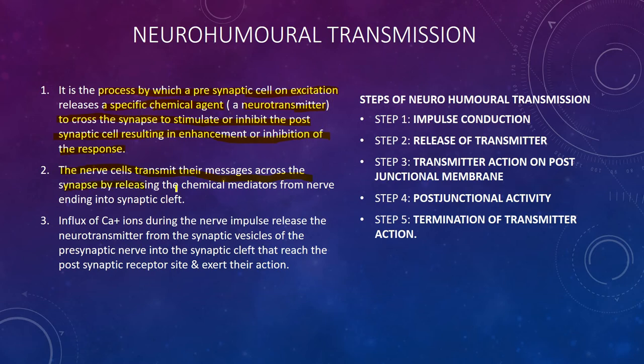Nerve cells transmit their messages across the synapse by releasing chemical mediators from nerve endings into the synaptic cleft. There is an influx of Ca²⁺ ions during the nerve impulse, causing release of transmitter from the synaptic vesicles of the presynaptic nerve into the synaptic cleft to reach the postsynaptic receptor site. The synaptic cleft is the space between a presynaptic and a postsynaptic axon, and the synaptic vesicle is a sac where the neurotransmitter is stored within the presynaptic neuron.